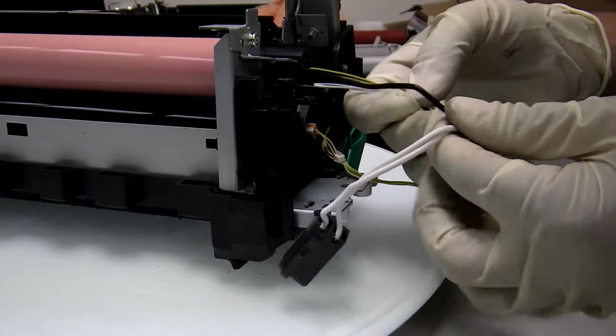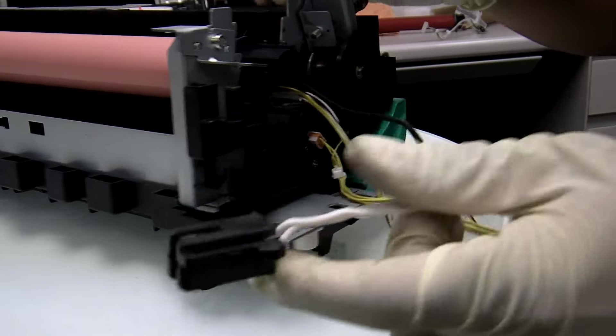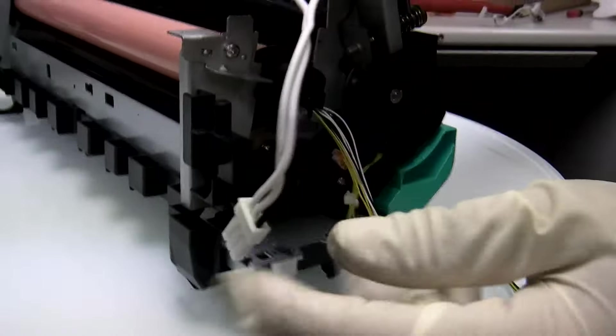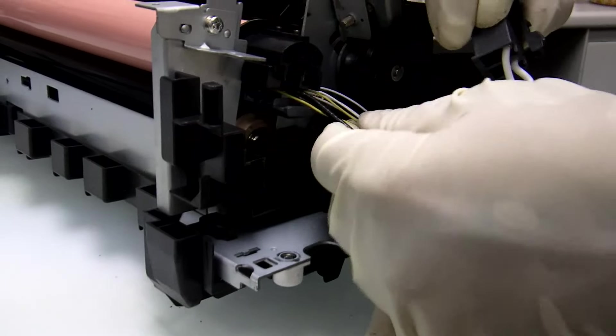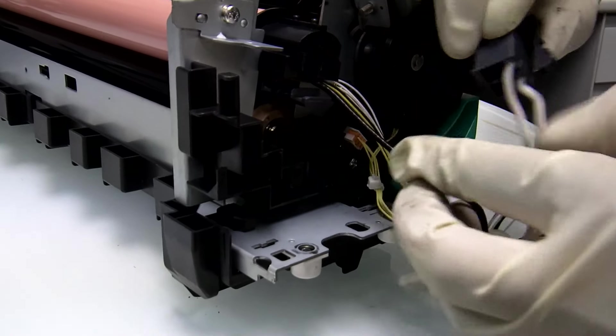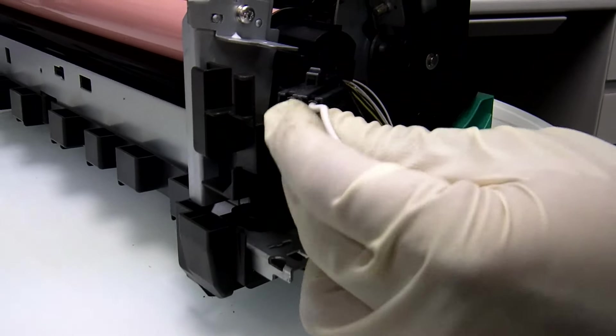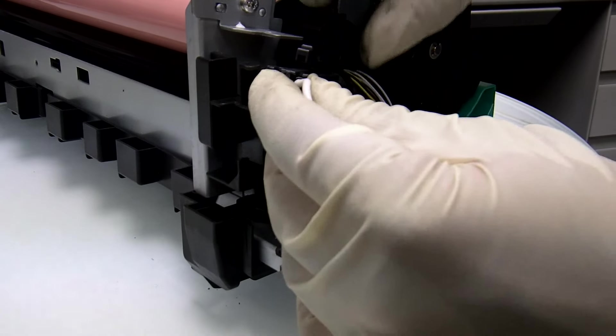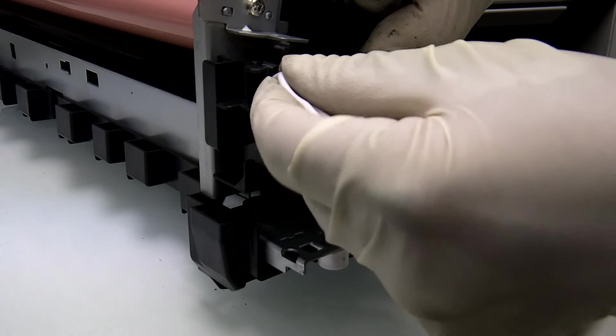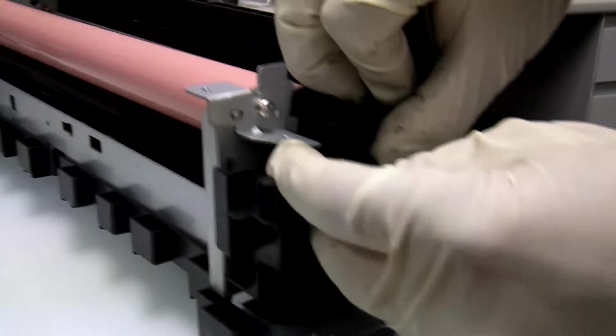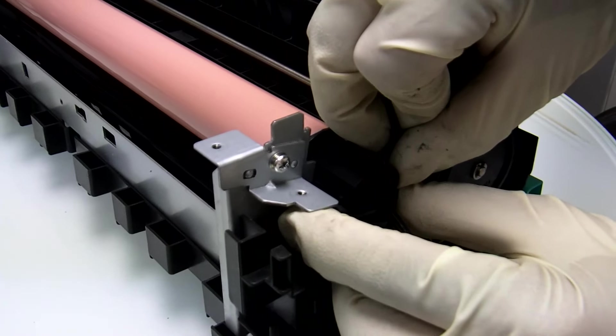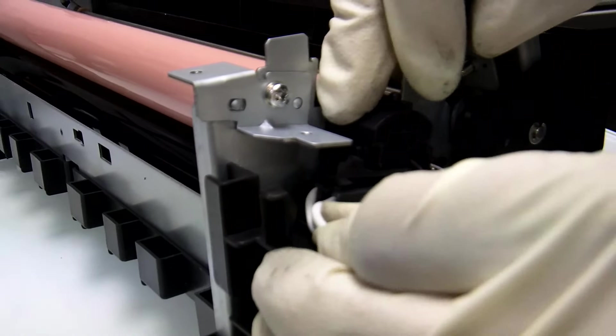Now back on the other side guys, start with connecting the black cable. Make sure that the cables are out of the way and you might have to lift the film assembly a little bit to install the connector. Make sure it's locked in place.